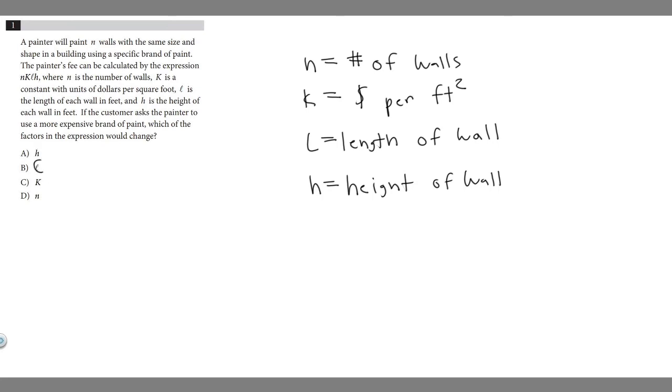We have all our variables here as options, so let's go by each one and decide whether or not it works. So n is the number of walls. If the paint is more expensive, is that going to change the number of walls we use?